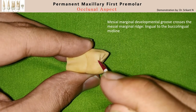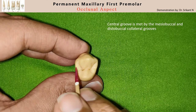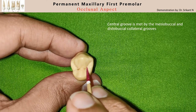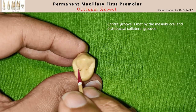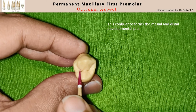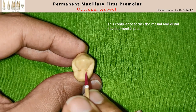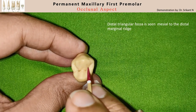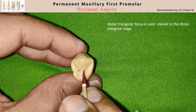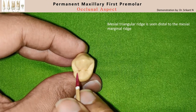Slightly lingual to the mesial contact area, located at the junction of the middle and the occlusal third, this central groove is met by two collateral grooves — the mesiobuccal collateral groove and the distobuccal collateral groove. These two grooves meet the central groove at two pits: the mesial developmental pit and the distal developmental pit. From these pits you can see a triangular fossa mesial to the distal marginal ridge, called the distal triangular fossa, and a similar triangular fossa distal to the mesial marginal ridge, called the mesial triangular fossa.